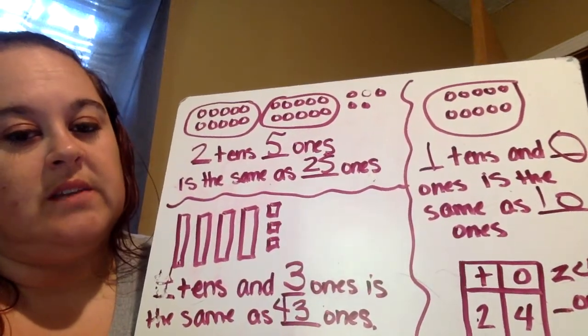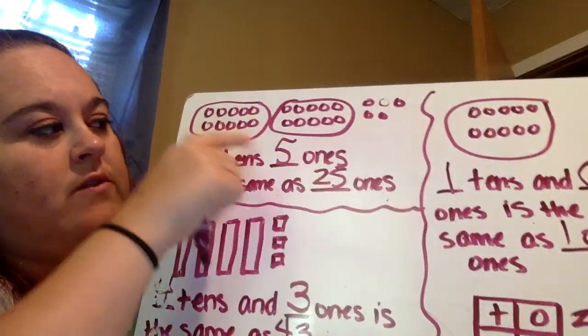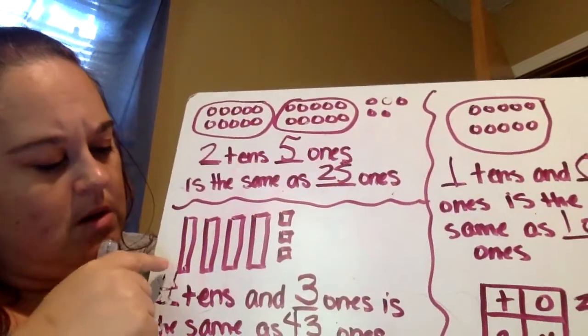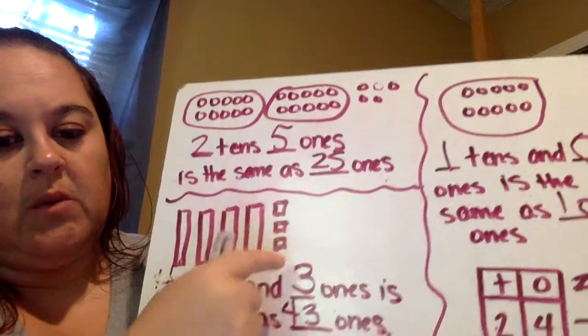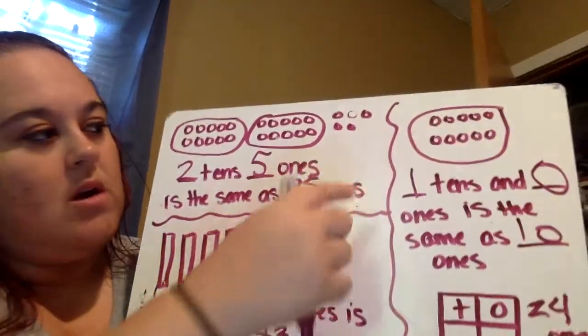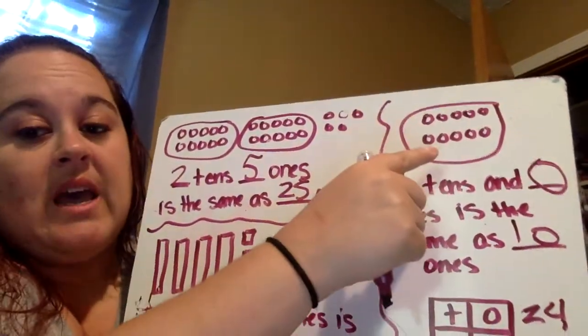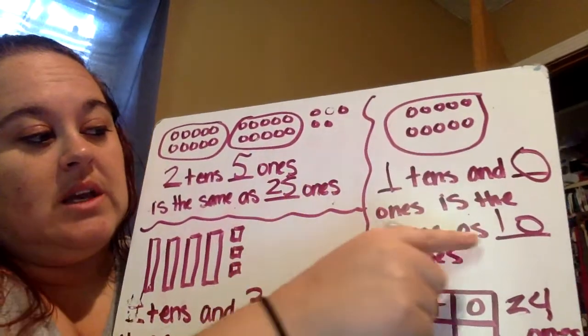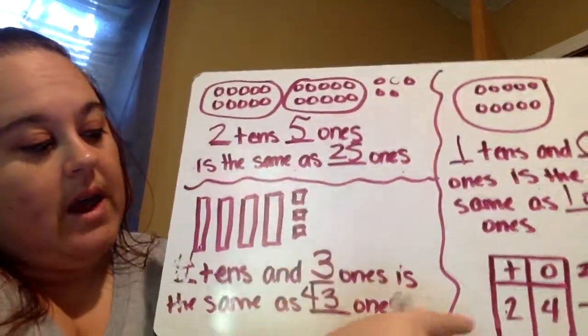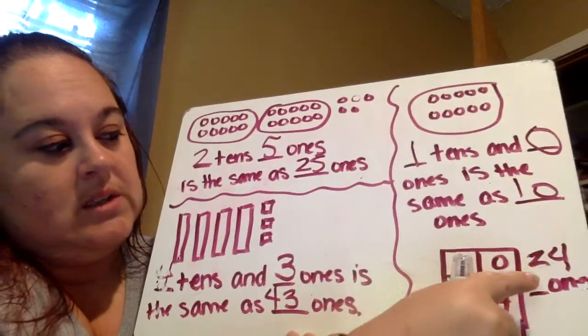So two tens and five ones is twenty-five. Two sets of ten, five ones. Four sets of ten and three ones is forty-three. One set of ten and zero ones is ten ones. And then two tens and four ones is twenty-four.